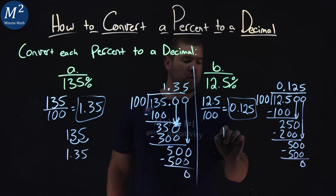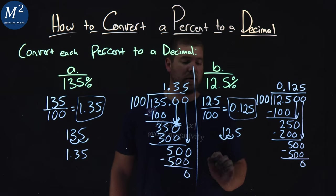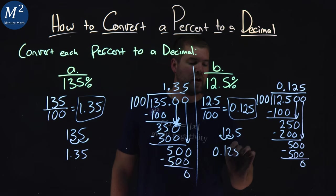Same thing here, we have 12.5%. The decimal place, move it to the left two spots. One, two. Right here. We have 0.125 as our decimal answer, which we got.